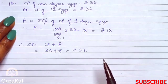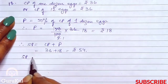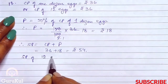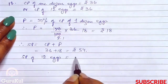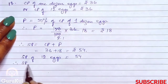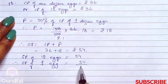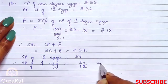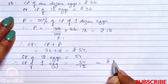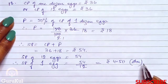Now we have to find out the selling price per egg. SP of 12 eggs is equal to 54. Therefore, SP of 1 egg is equal to 54 divided by 12, which gives us the answer rupees 4.50. This is the selling price of 1 egg.